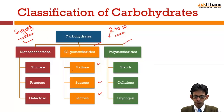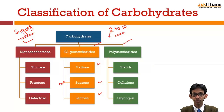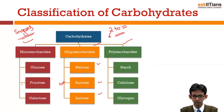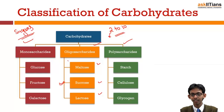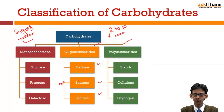Sucrose is the common sugar we use in our food — it is cane sugar. Glucose is also known as sugar, fructose is fruit sugar, maltose is malt sugar, and lactose is milk sugar.